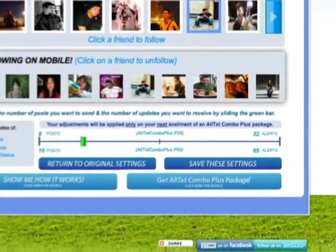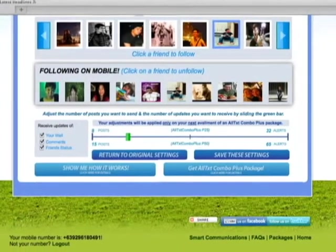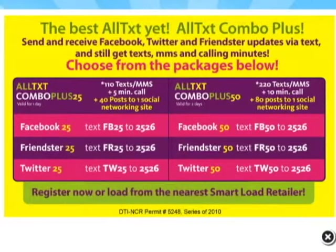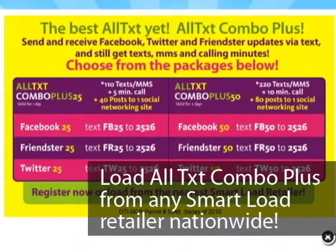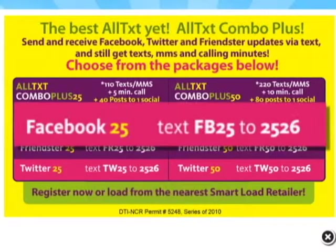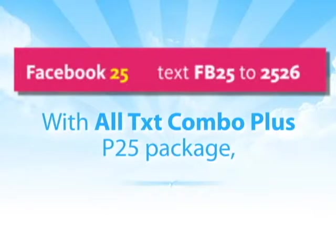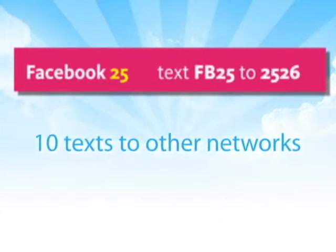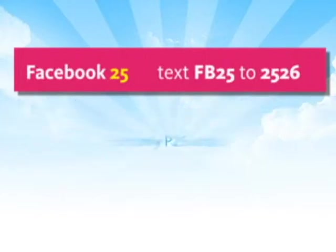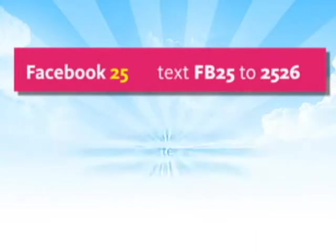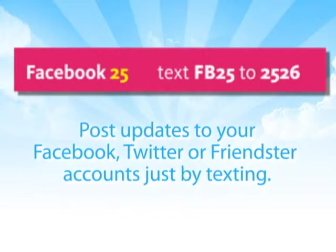Kaya, to start using, get the package — click on Get All Text Combo Plus Package. Choose the package na bagay sayo. Using your cellphone, text the keyword of the package you want. Just make sure you have enough load in your phone to make the purchase. Pwede rin magpa-load ng All Text Combo Plus from any Smart load retailer nationwide. For example, gusto ko ng Facebook 25 Package. With All Text Combo Plus 25 Package, I can get everything in one: free 100 texts or MMS to Smart, 10 texts to other networks, and 5 minutes consumable calls — all in one talaga for only 25 pesos a day. You can call, you can text to all networks, send MMS to your Smart Buddy friends, and post updates to your Facebook, Twitter, or Friendster accounts just by texting.